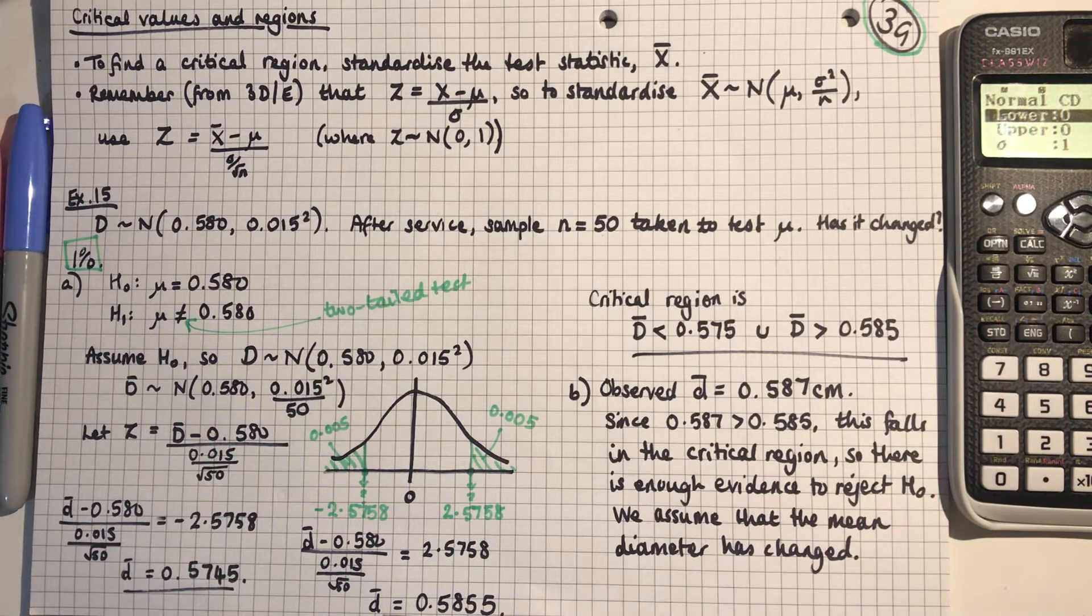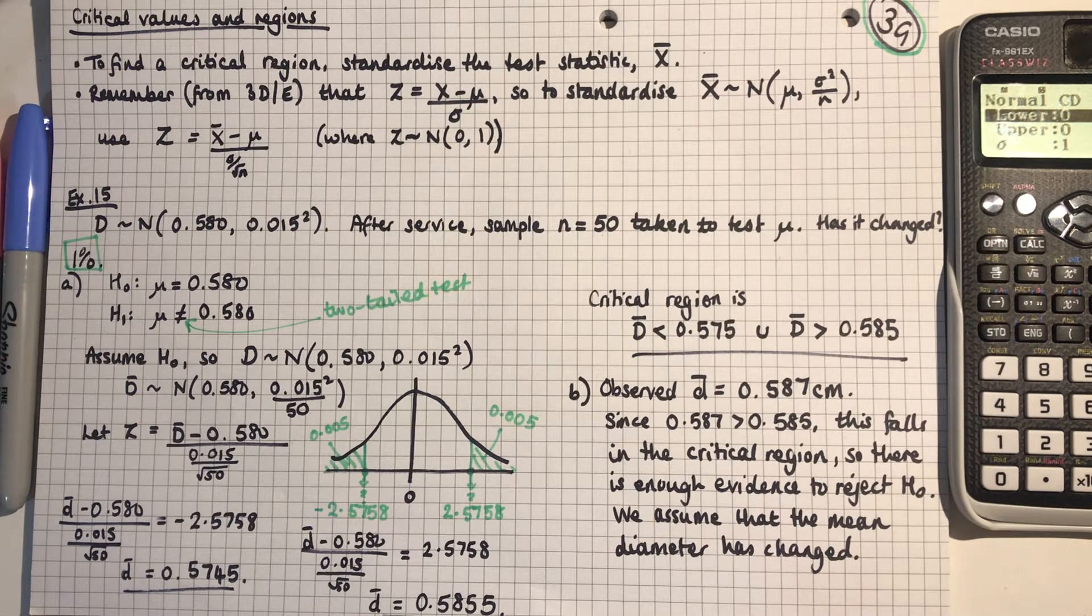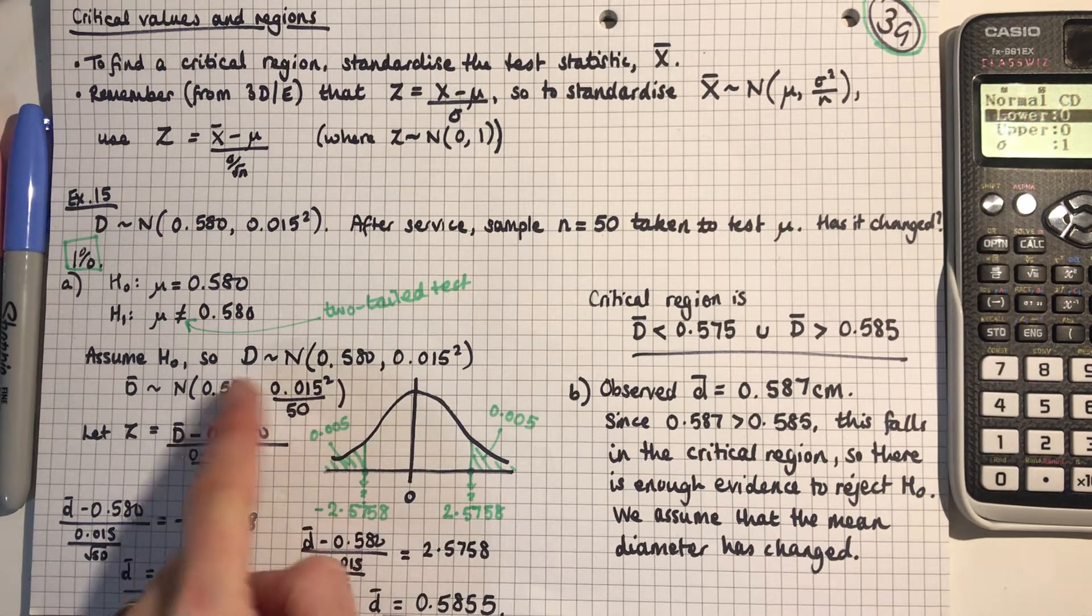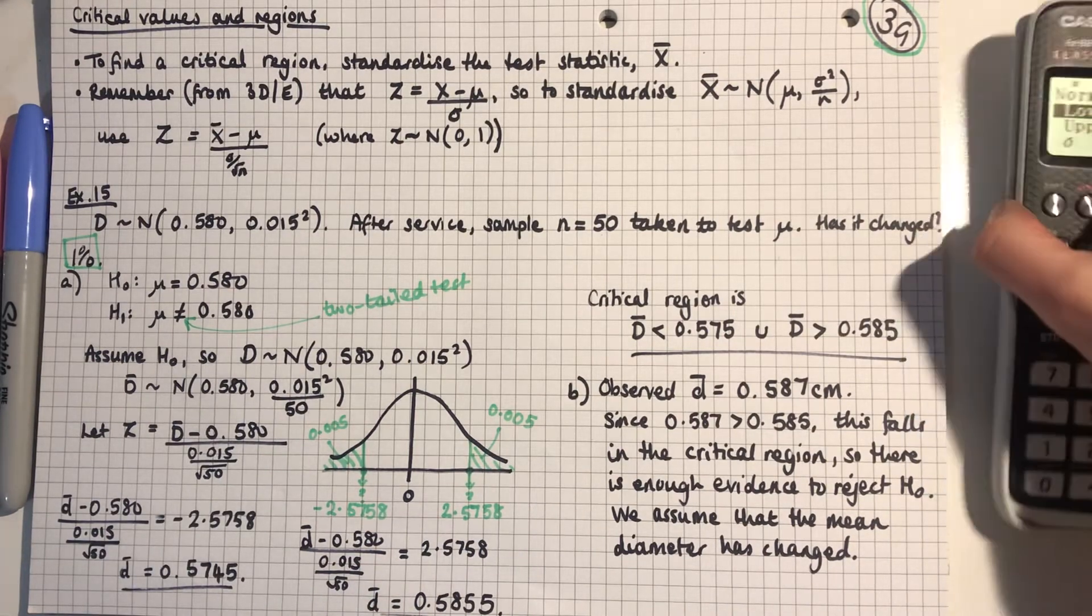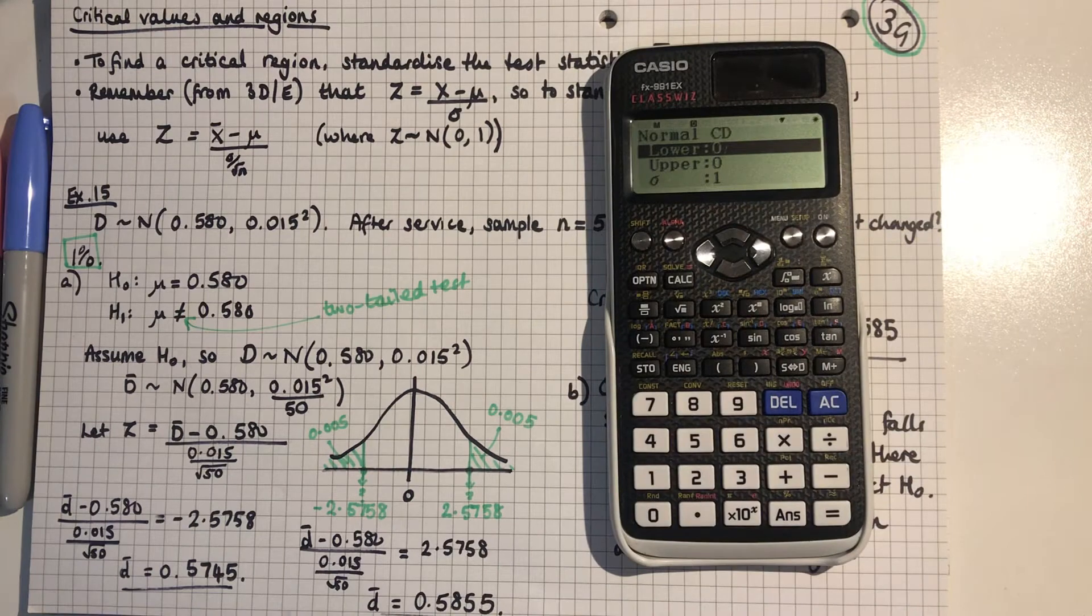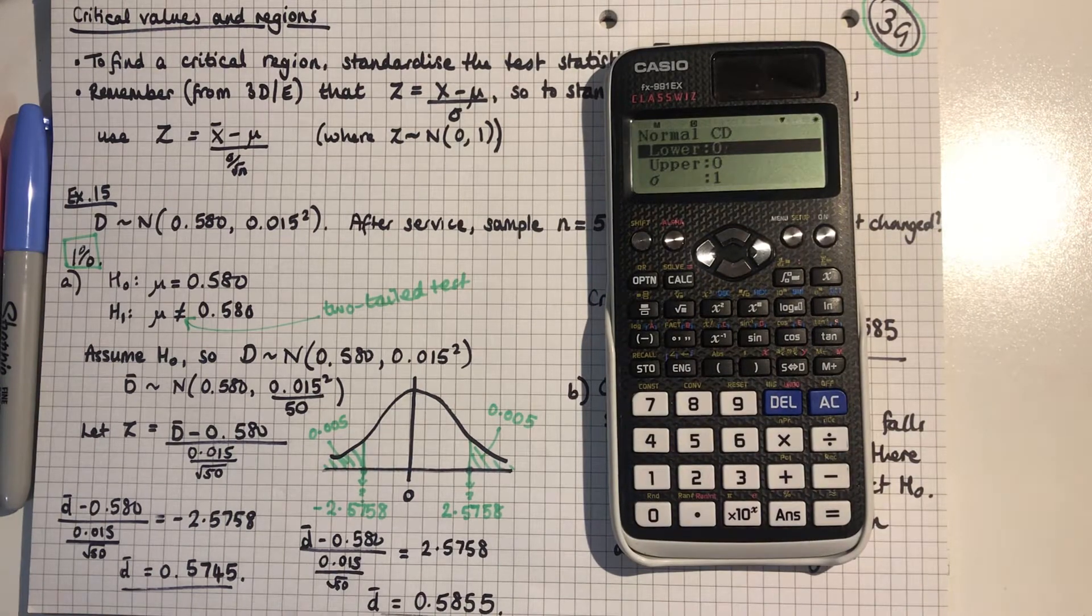You learned back in 3D and 3E that standardizing is really helpful when you have unknown parameters of mu or sigma. But if you know the parameters of mu or sigma, you don't need to standardize, you can just use this function on the calculator.